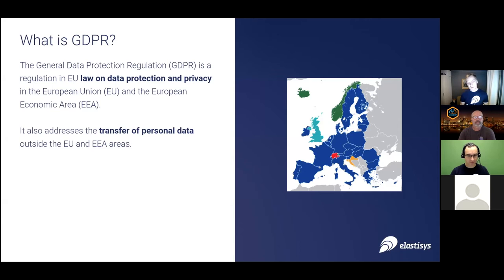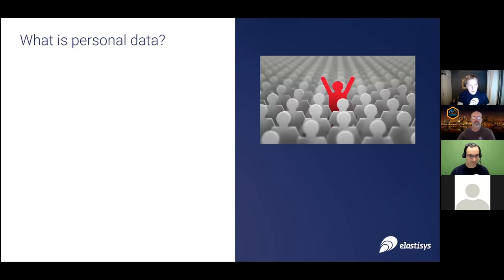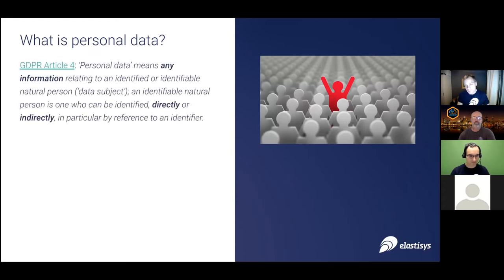GDPR addresses transfer of personal data, which has implications for how we do business in cloud-related industries outside the EU and EEA area. What is personal data? According to GDPR, personal data has a pretty broad definition — pretty much anything that touches on a person or can be used to identify a human being is considered personal data. Examples include names, personal identification numbers, location, biometrics, or online identifiers such as your IP address. It also covers a wide range of other identifiable factors that indirectly can help identify a specific human being.